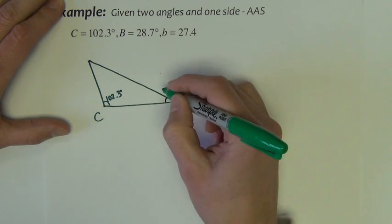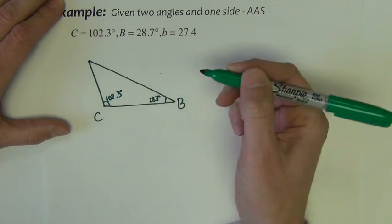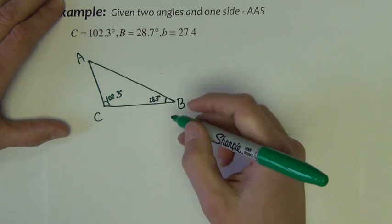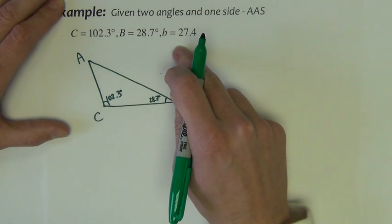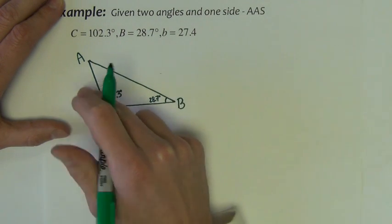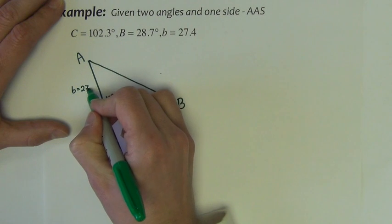We just need one of these other two to be B. It doesn't matter. So let's call this B 28.7. And so that leaves this to be angle A. We don't know it. What we do know is side B. Side B must be set up across from angle B. So this is side B over here. It's 27.4.